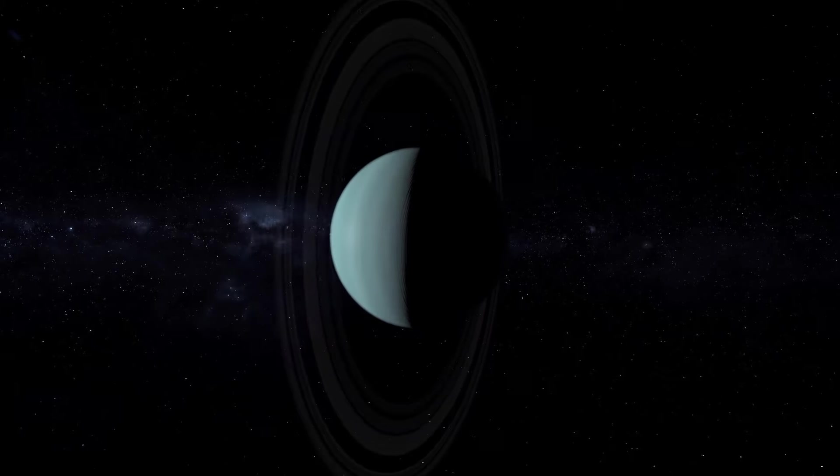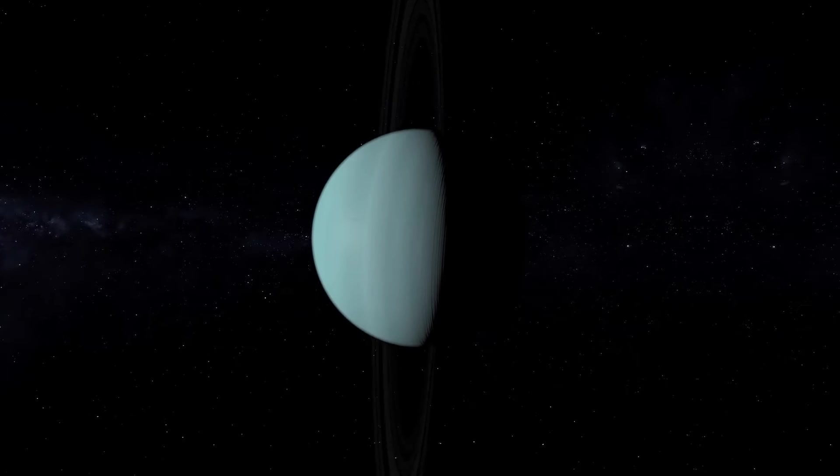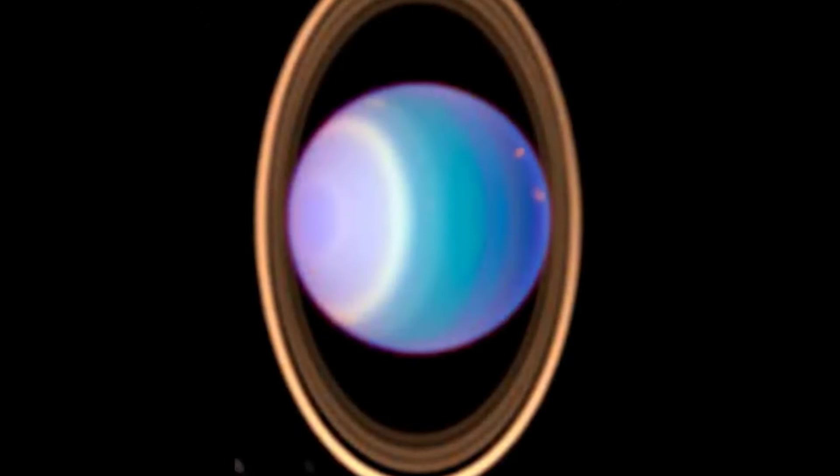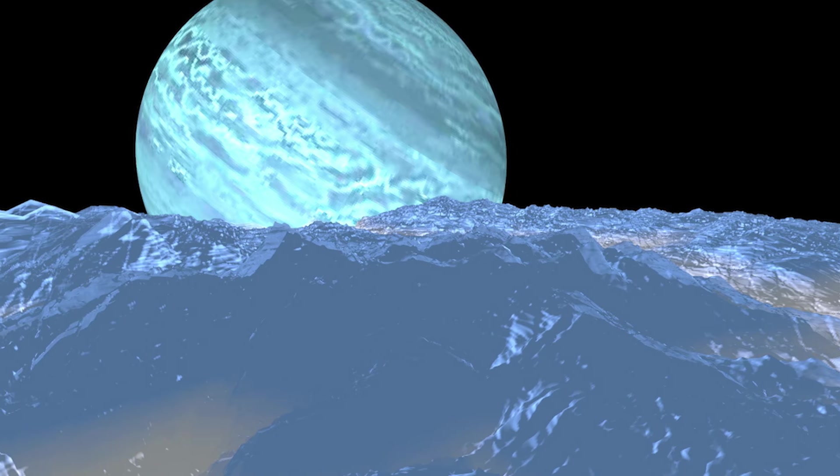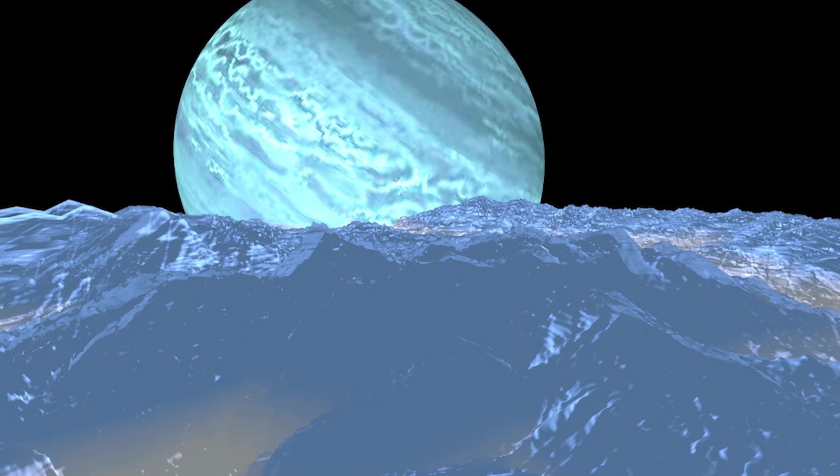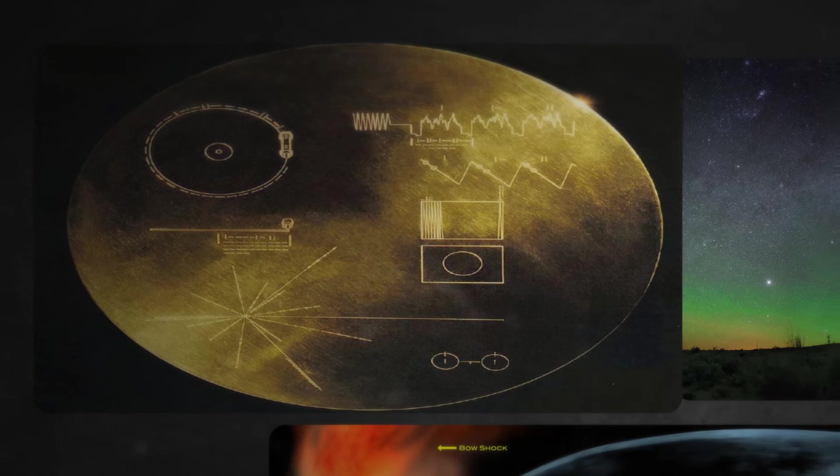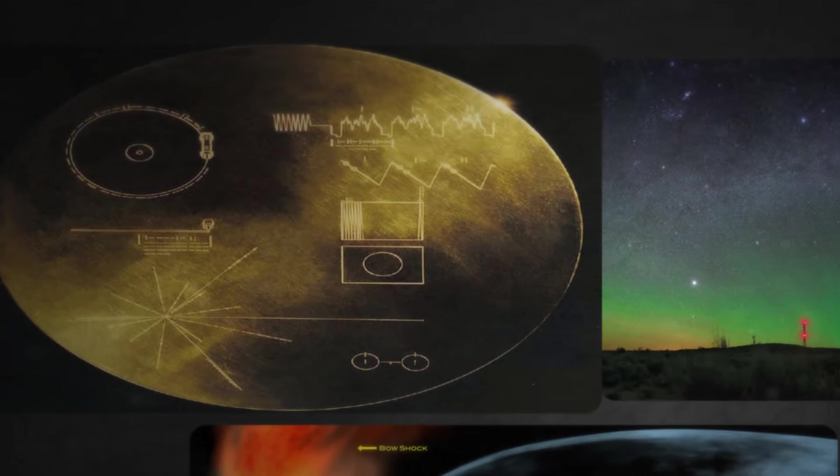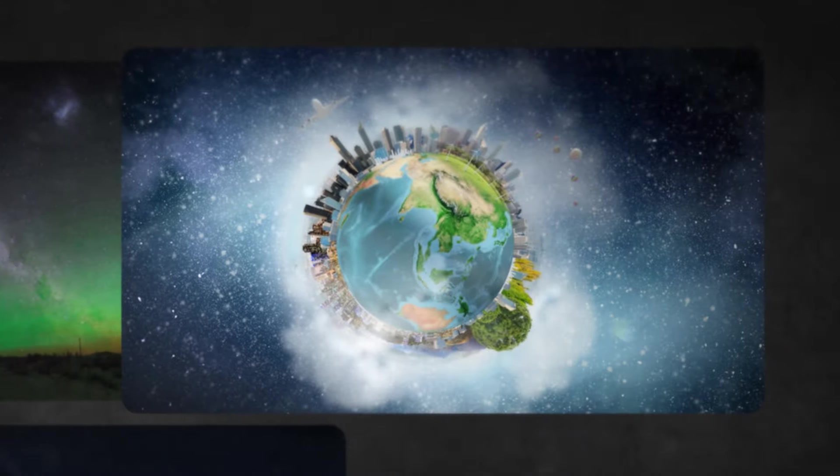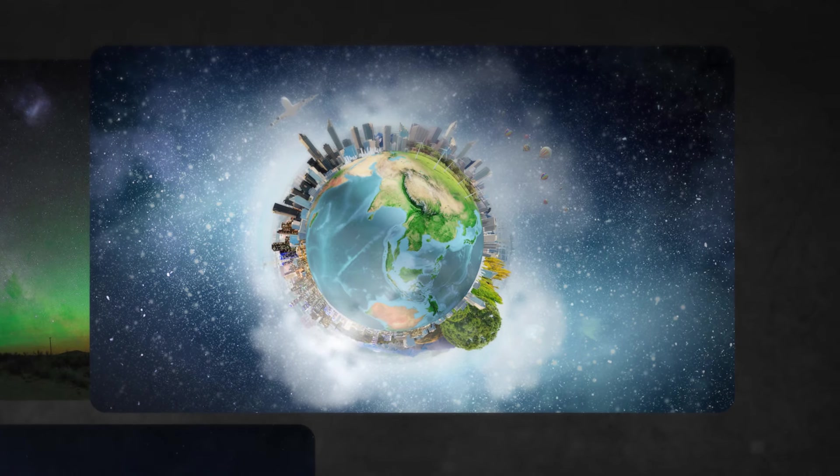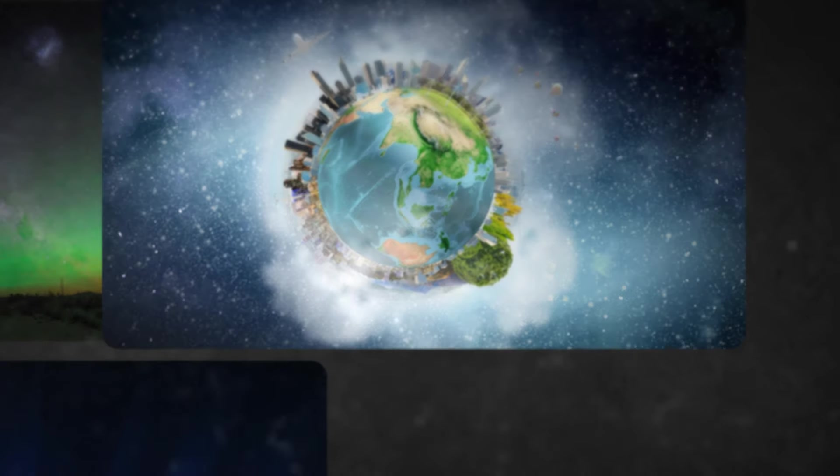Three years later, it visited Neptune, providing the first close-up images and data of Neptune, its rings, and its largest moon, Triton. It discovered geysers erupting nitrogen gas on Triton and studied its unique retrograde orbit. As part of their mission, both Voyagers were equipped with a golden record containing sounds and images representing Earth and humanity. This was intended as a message to any potential extraterrestrial lifeforms the spacecraft might encounter in interstellar space.